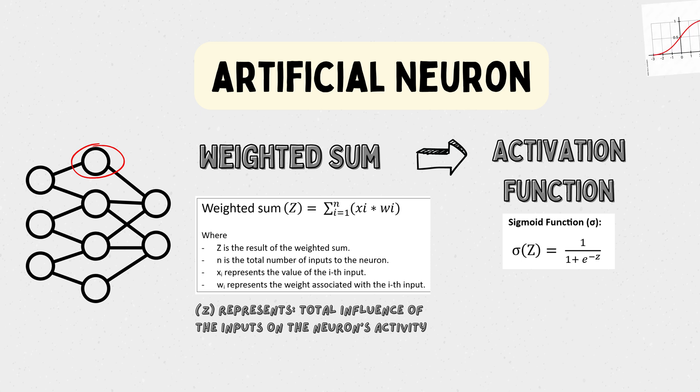The sigmoid function squashes the output between 0 and 1, making it suitable for binary classification problems. ReLU is widely used due to its simplicity and effectiveness. It replaces negative values with 0 and passes positive values unchanged. The tanh function squashes the output between minus 1 and 1, providing a balanced response.